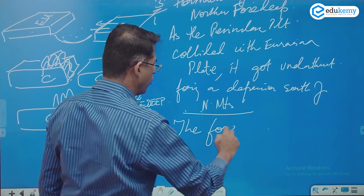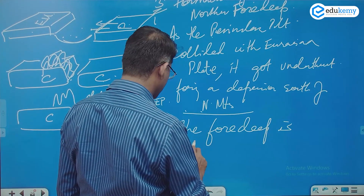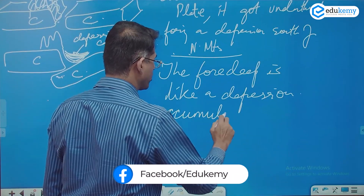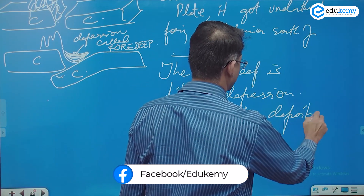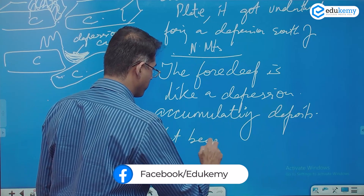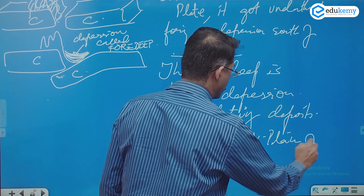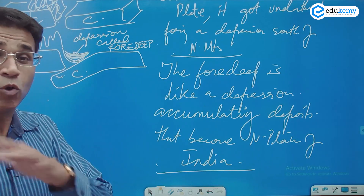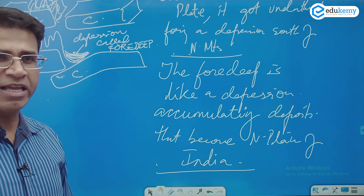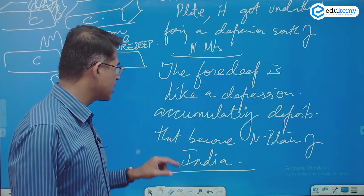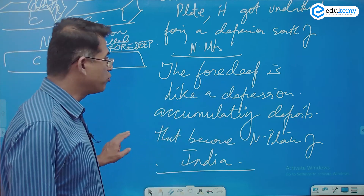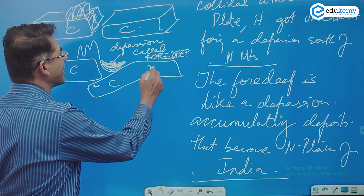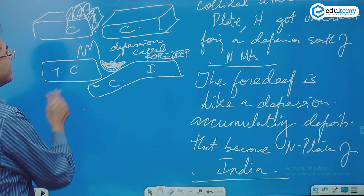The foredeep is like a depression that keeps accumulating deposits. Those deposits become the Northern Plains of India. On one side is the Indian side and on the other side is the Tibetan side, with the Himalayas in between.